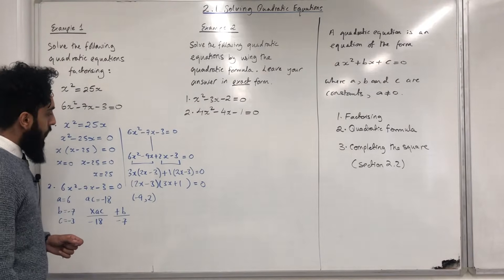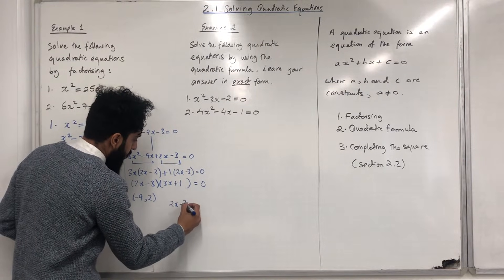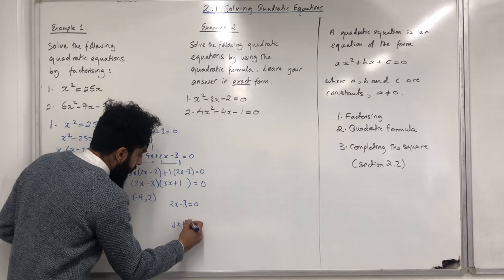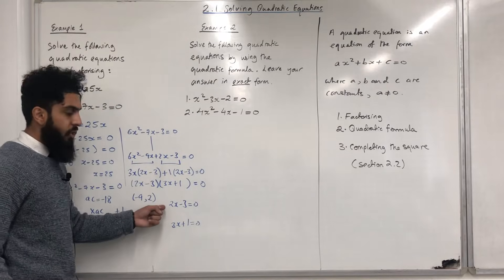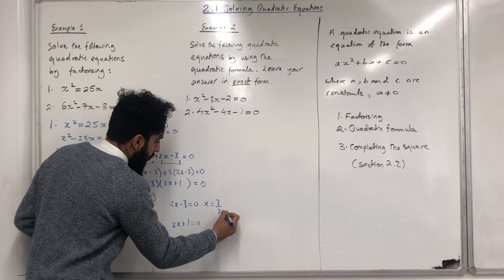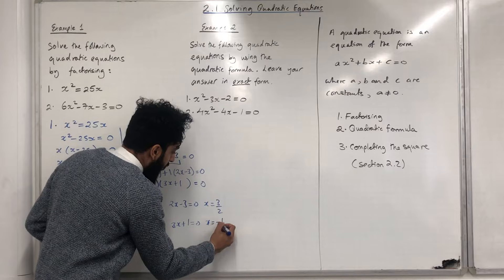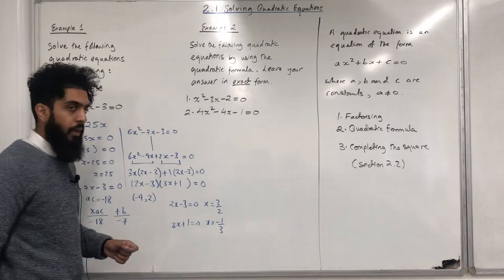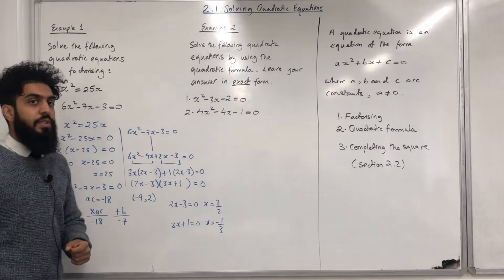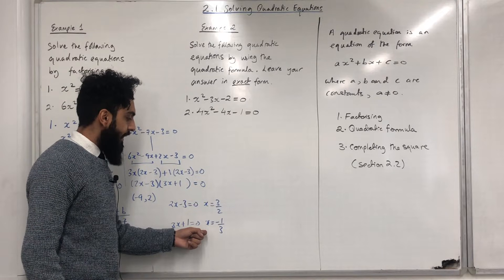Now we need to solve two equations: the first bracket equal to 0 and the second bracket equal to 0. The solution to 2X - 3 = 0 is X = 3/2. The solution to 3X + 1 = 0 is X = -1/3. So the quadratic equation 6X² - 7X - 3 = 0 has two solutions: X = 3/2 and X = -1/3.